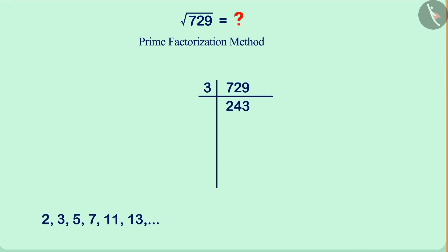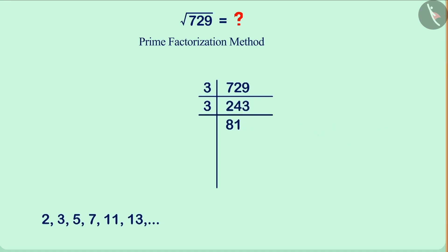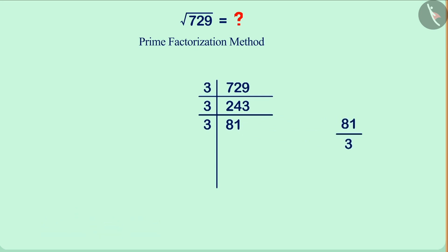Dividing 729 by 3 gives us 243. Write it below 729. Now, find the smallest prime number that divides 243 completely. That is 3. Write 3 in the first column of the second line. Dividing 243 by 3 gives 81. Write it below 243. Now, find the smallest prime number that divides 81 completely. That is 3. Write 3 in the first column of the third line. Dividing 81 by 3 gives the result 27. Write it below 81.